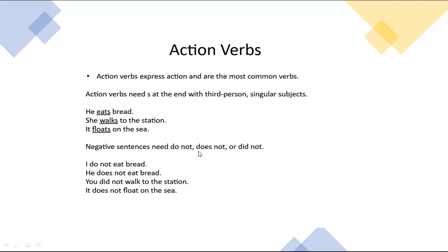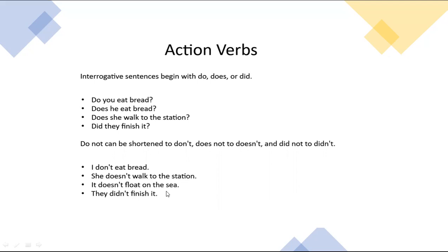Negative sentences need 'do not,' 'does not,' or 'did not.' For example: 'I do not eat bread,' 'he doesn't eat bread,' 'you did not walk to the station,' 'it doesn't float on the sea.' Interrogative sentences begin with 'do,' 'does,' or 'did' placed before the subject. 'Do not' can be shortened to 'don't,' 'does not' to 'doesn't,' and 'did not' to 'didn't' — these are contractions. For example: 'I don't eat bread,' 'she doesn't walk to the station,' 'they didn't finish it.'